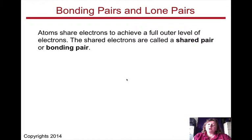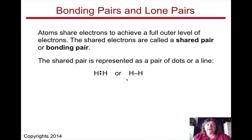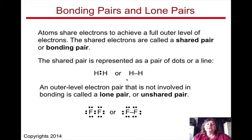So atoms share electrons to achieve a full outer level of electrons. The shared electrons are called a shared pair or bonding pair. This shared pair is represented as a pair of dots or a line. So we can represent those electrons as dots or lines. It does not matter. An outer electron pair that is not involved in bonding is called a lone pair or an unshared pair. And below here, you can see F2 with all dots or with a combination of dots and dashes.